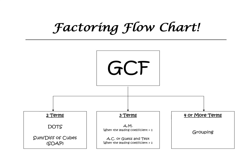Hi, everyone. In today's lesson, we're going to talk more about different factoring techniques. As always, we're going to try greatest common factor first. After greatest common factor, if we have three terms, we're going to factor by AM when the leading coefficient is equal to one. And we're going to use AC, or guess and test, when the leading coefficient is greater than one. So let's just look at a couple of examples.